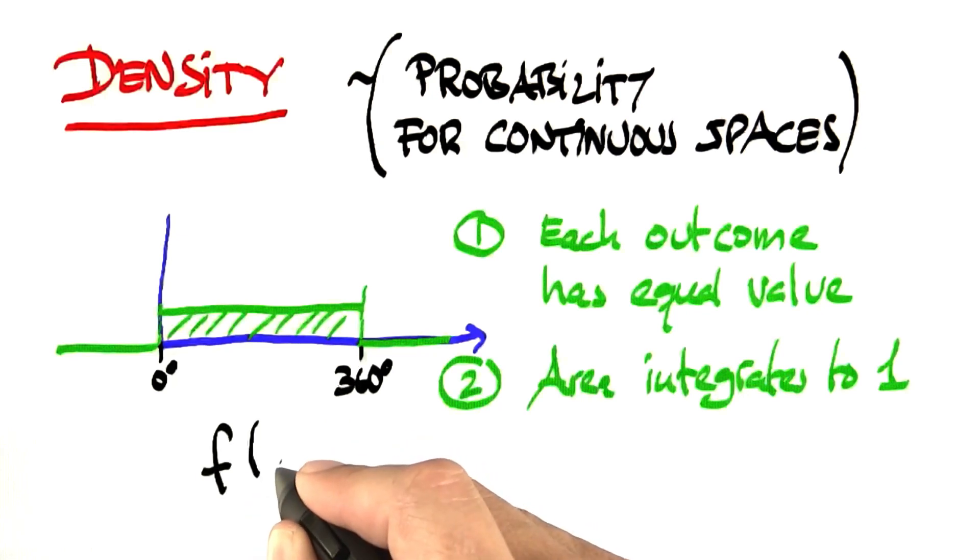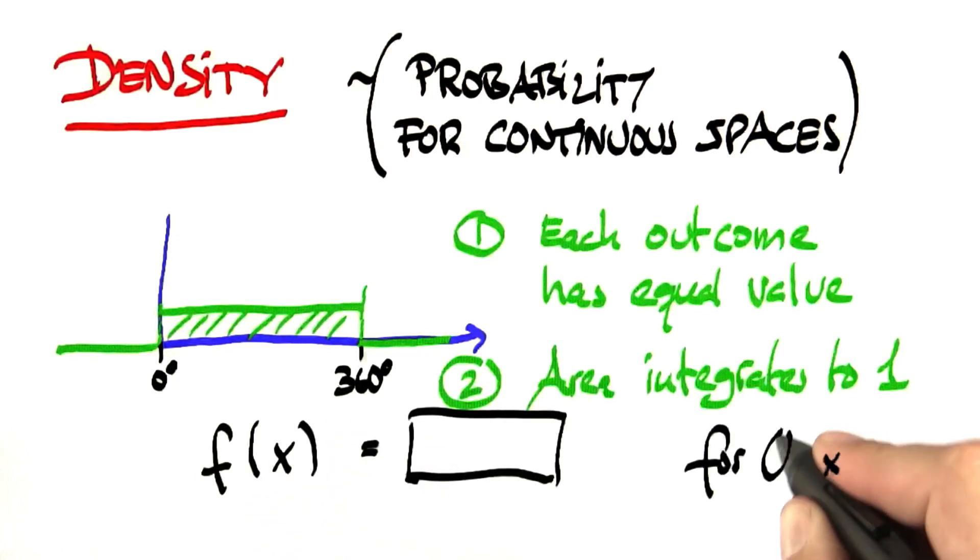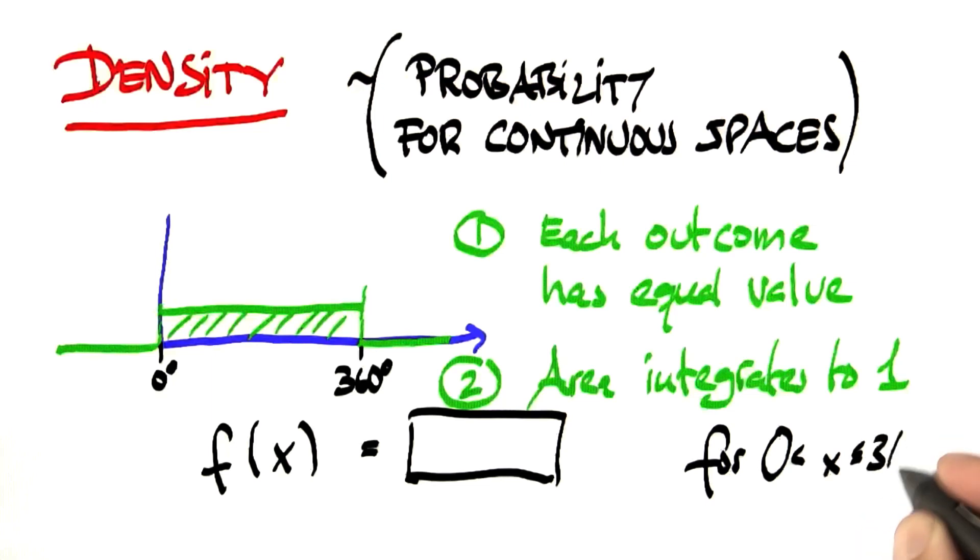So tell me, what is this function for x's that are between 0 and 360 degrees? There's a single numerical value that goes in here and you have to guess it.